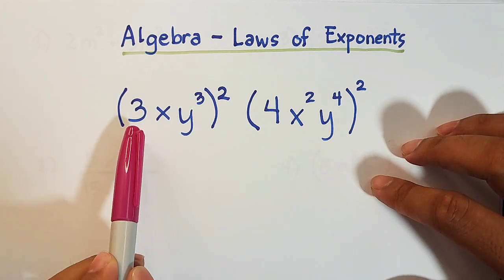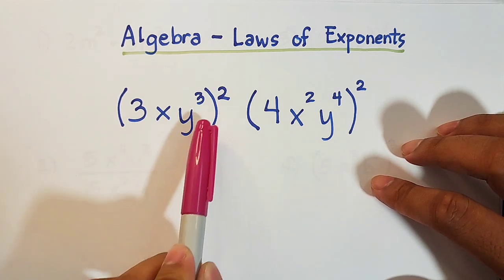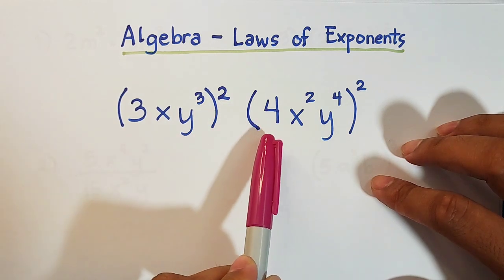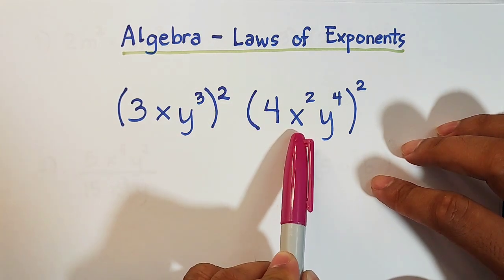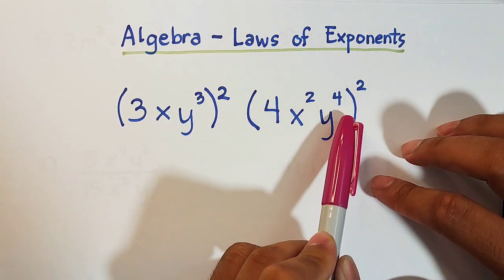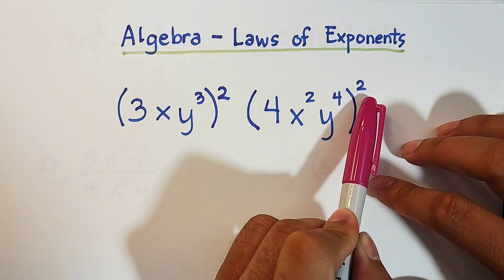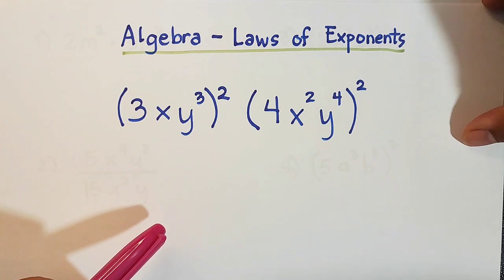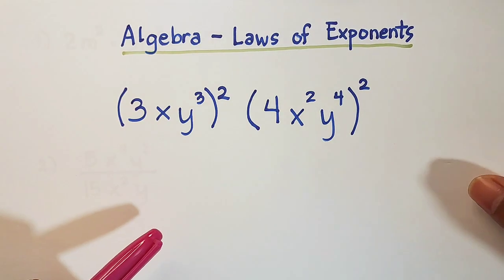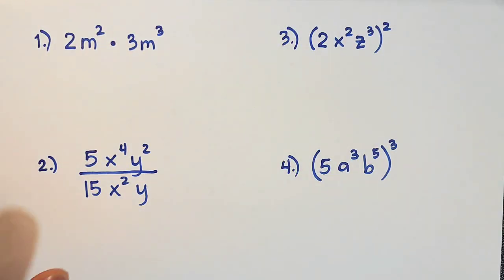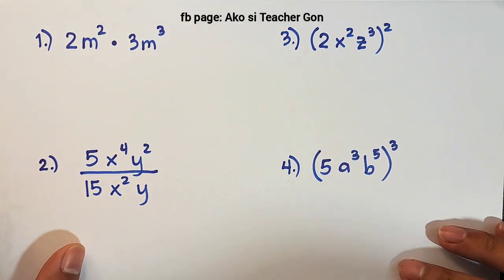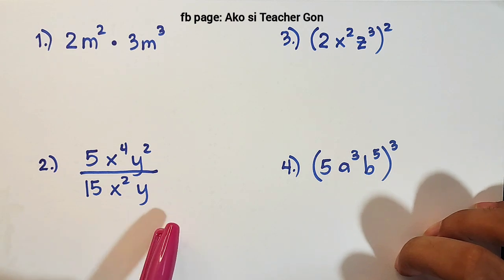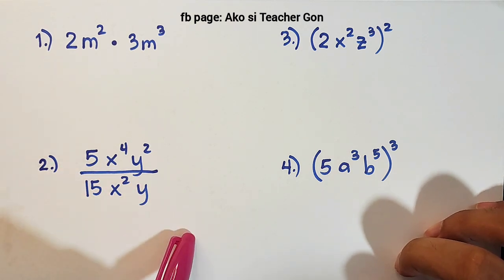We have the quantity of 3xy cubed raised to the second power times 4x squared y to the fourth power raised to 2. Before we start answering this question, let's first look at some simple expressions to be simplified using laws of exponents. I have four different examples, and right after this, we will try to answer the first given expression.